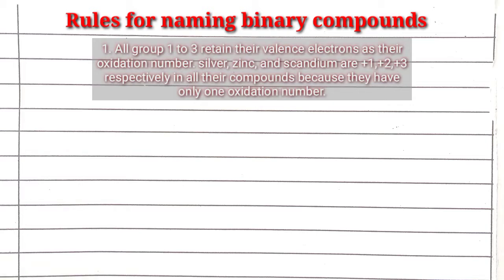We have elements like scandium that is always plus 3, silver that is always plus 1, and zinc that is always plus 2. We don't need to calculate the oxidation state for these elements. If an element is found in group 1, the oxidation state is always plus 1; if in group 2, it is always plus 2; and if in group 3, it is always plus 3.